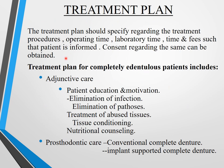The treatment plan should specify the treatment procedure, operating time, lab time, and fees. Informed consent must be obtained after explaining all appointment details to the patient. For the completely edentulous patient, adjunctive care includes patient education and motivation, elimination of infection, elimination of pathosis, treatment of abused tissue if required (tissue conditioning), and nutritional counseling.